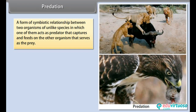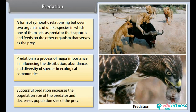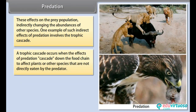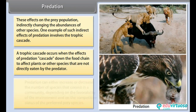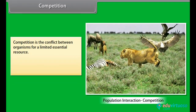Predation: A form of symbiotic relationship between two organisms of unlike species in which one acts as a predator that captures and feeds on the other organism, which serves as the prey. Predation is a process of major importance in influencing the distribution, abundance, and diversity of species in ecological communities. Successful predation increases the population size of the predator and decreases the population size of the prey. These effects on the prey population indirectly change the abundances of other species. A trophic cascade occurs when the effects of predation cascade down the food chain to affect plants or other species not directly eaten by the predator. Predation can either increase or decrease the number of species that coexist in a community.